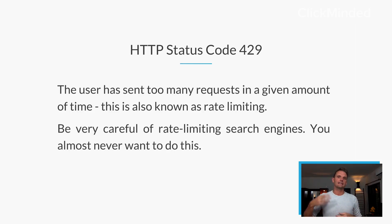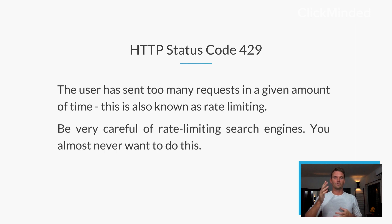HTTP status code 429 means "too many requests." A 429 means that the user — the client side, remember this is a 400, so it's a client-side error — has sent too many requests in a given amount of time. This is also colloquially known as rate limiting. Be very careful when you're looking at your own server logs about rate limiting search engines. A lot of infrastructure or DevOps engineers look at requests agnostic of the user agent and say they don't want to let any one user request too many times because of DDoS protection — distributed denial of service.